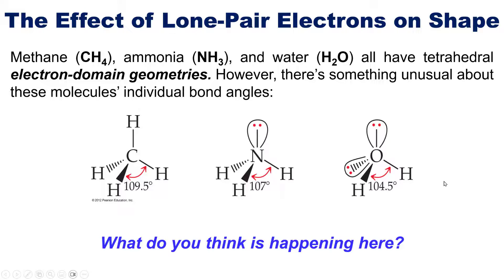As you might guess, lone pairs take up more room than non-lone pair groups. Thus, the more lone pairs you have around a central atom, the more constrained or decreased the bond angle will be between all of the other non-lone pair groups.